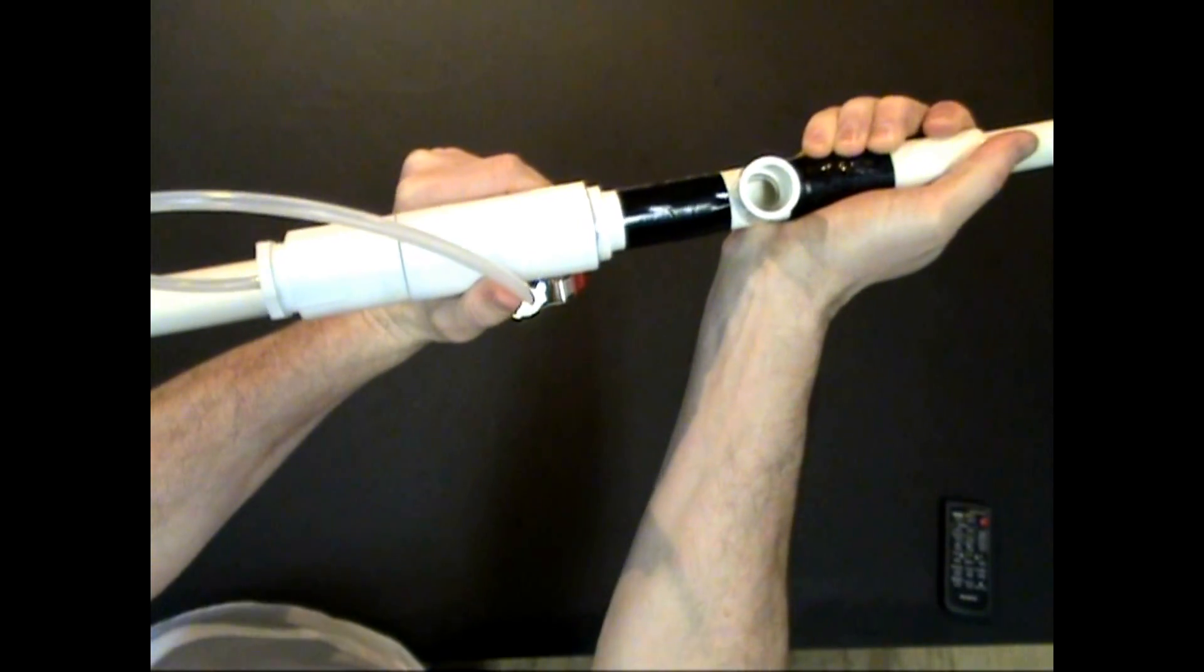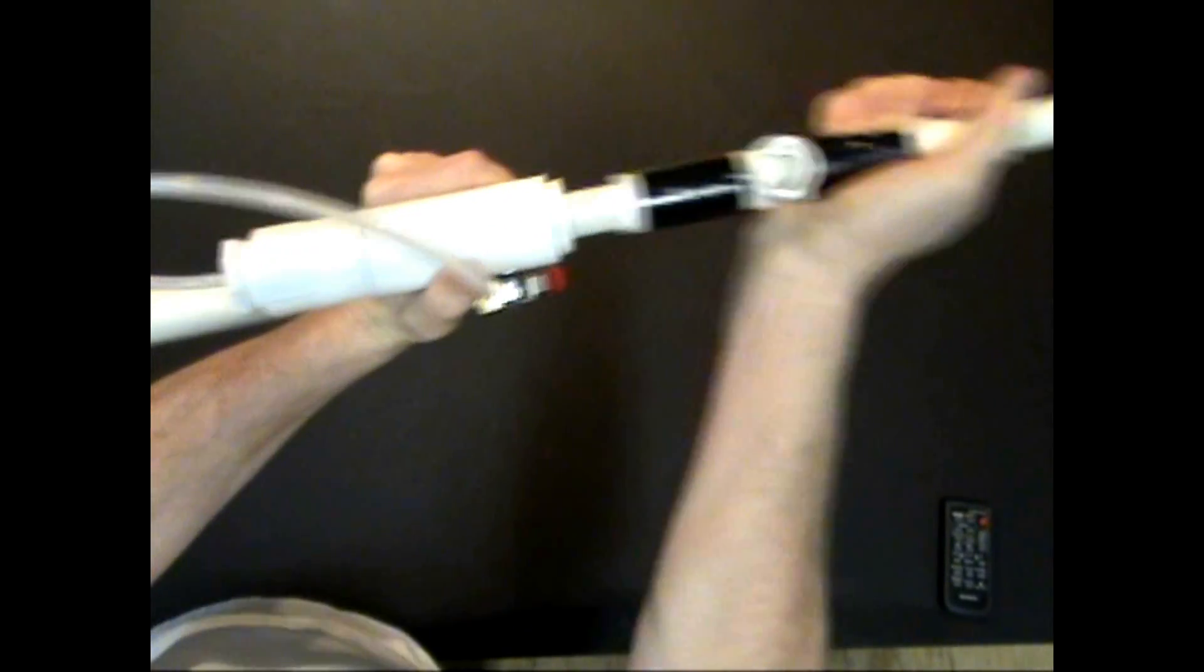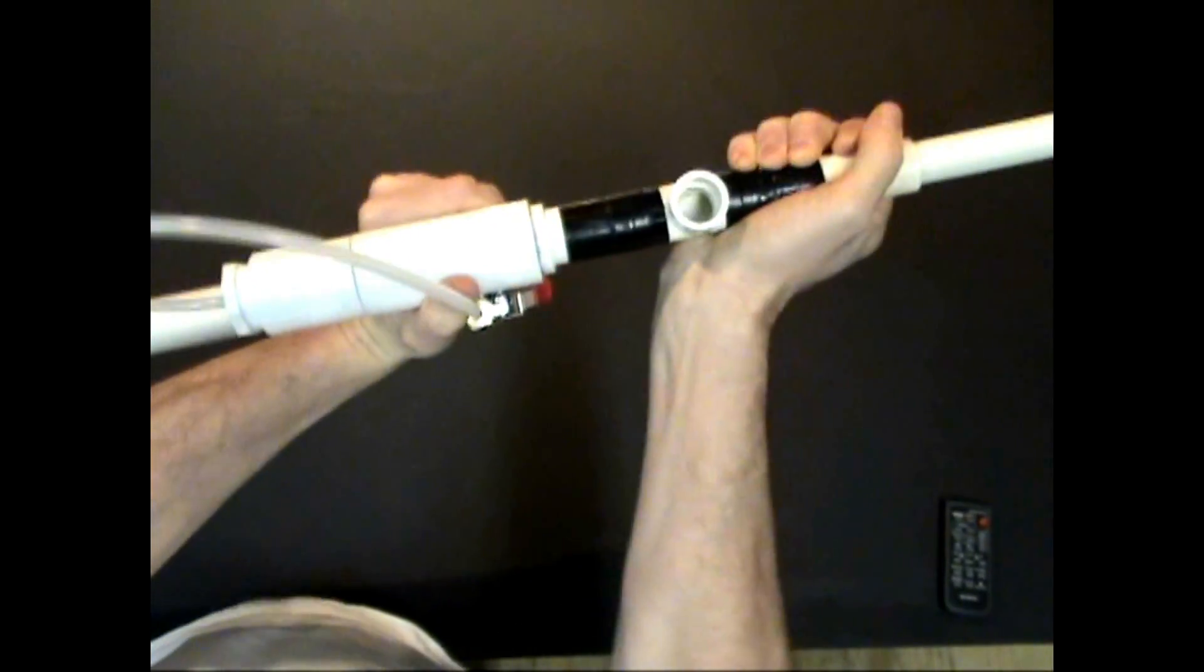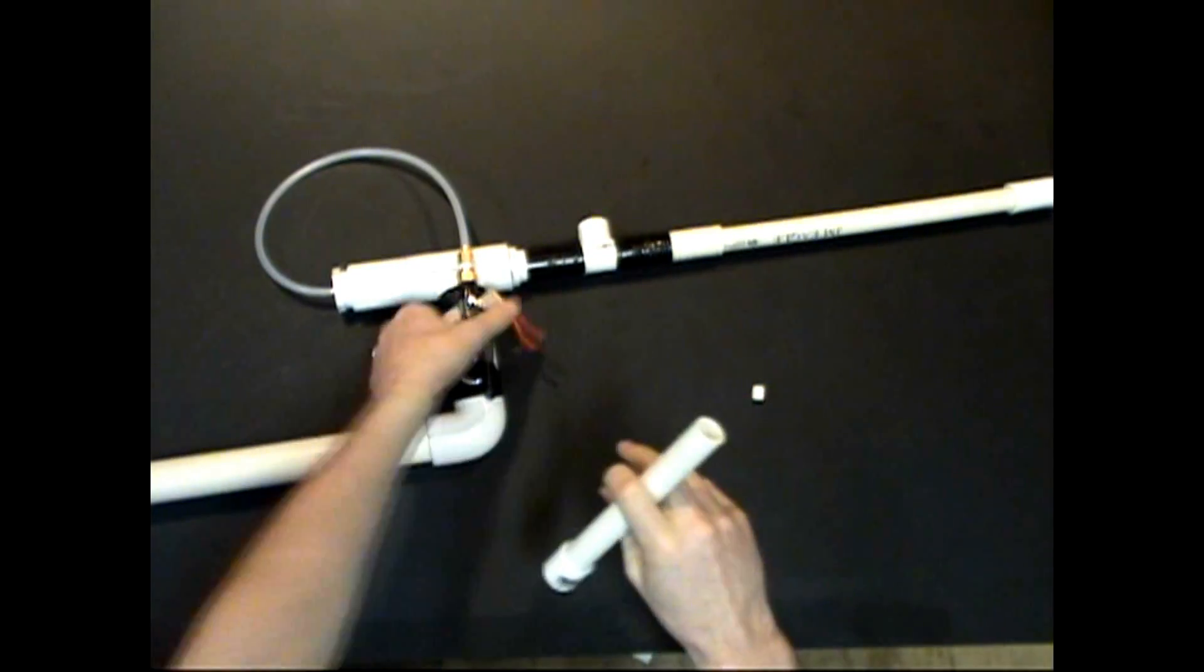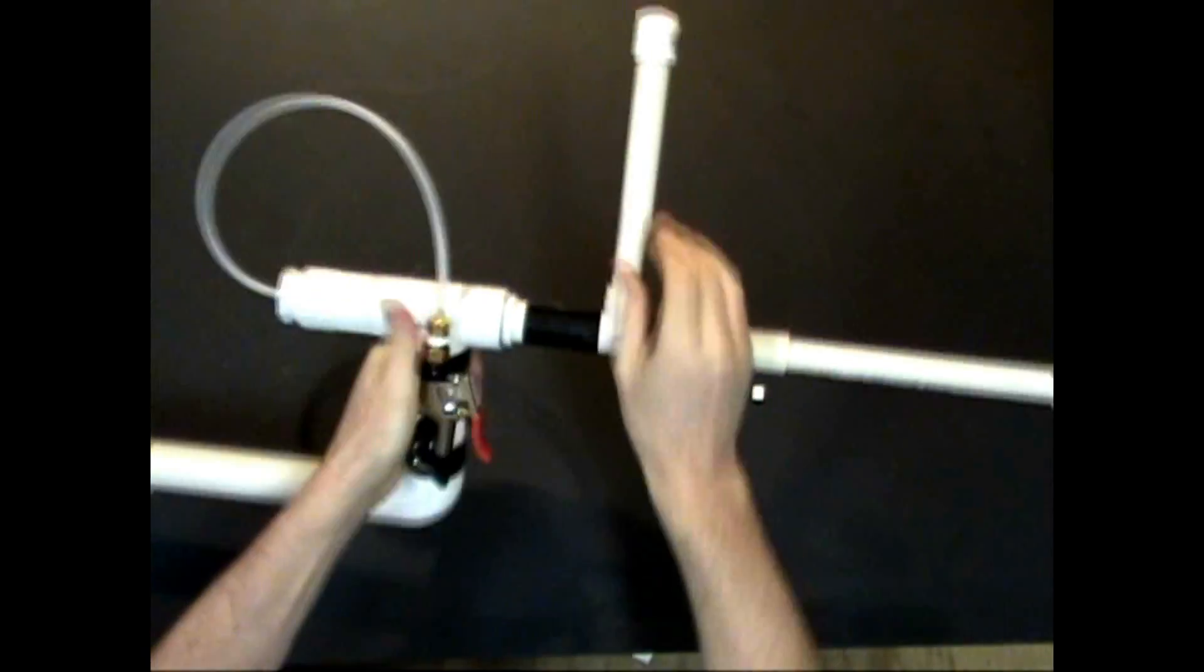I drilled a hole in the top of the barrel and added a T and some pipe to make this pump action loader. I can use this bit of pipe as a magazine, fill it up with marshmallows or marbles and shoot as fast as I can rack the action.